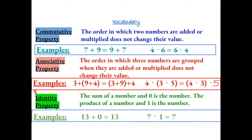The first property is the commutative property, which says that the order in which two numbers are added or multiplied does not change their value. For example, 7 plus 9 is equal to 9 plus 7, and 4 times 6 is equal to 6 times 4. This rule does not apply to subtraction or division.